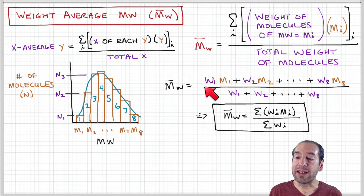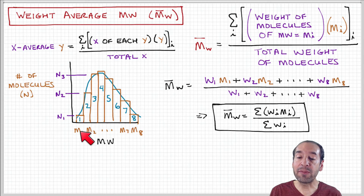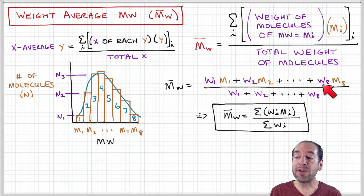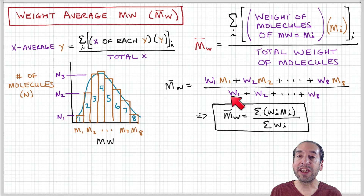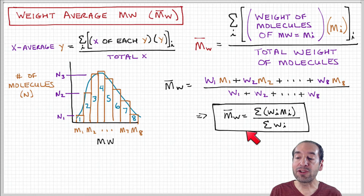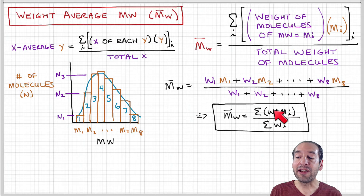The weight average molecular weight is the sum of the weight of molecules with molecular weight mi times mi. So in the numerator: the weight of molecules with molecular weight m1 times m1, plus the weight with m2 times m2, and so forth up to w8 times m8. In the denominator, the total weight: w1 plus w2 and so on up to w8. This gives us the compact equation: the weight average molecular weight equals the sum of wi times mi over the sum of wi, where wi is the weight of molecules in each bin.